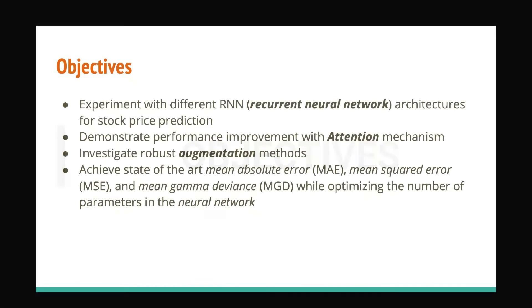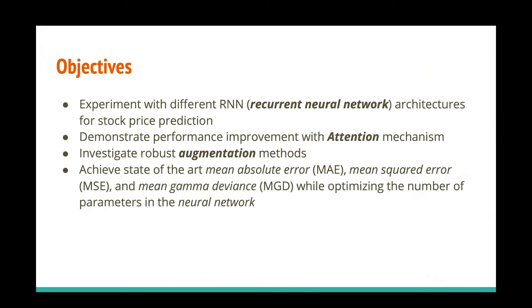In this experiment, I plan to test different recurrent neural network (RNN) architectures for stock price prediction. Details of RNN architecture are mentioned in the methodology section. I will also demonstrate model performance improvement with the attention mechanism, which is a very well-known mechanism in deep learning. I also used a robust augmentation method — a technique to improve data quality by adding various variations or noise to the data so that the model learns many ways to interpret incoming data.